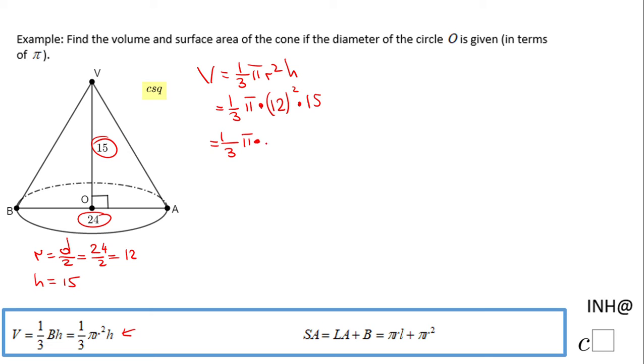We're going to keep simplifying. We have 12 squared, which is 144, and then times 15. The best way here is to simplify. 3 goes into 15 five times. So the last thing we're going to do to find the volume is 5 times 144, and that is going to be 720π. The volume of this cone is 720π cubic units.